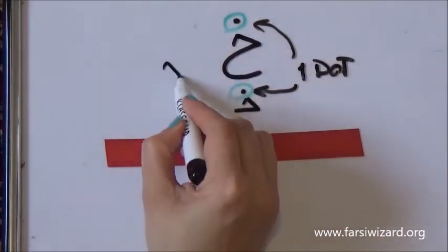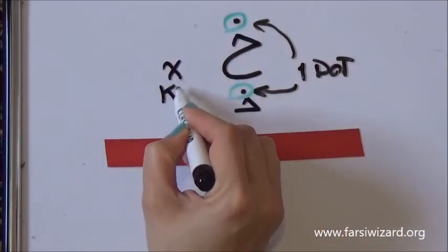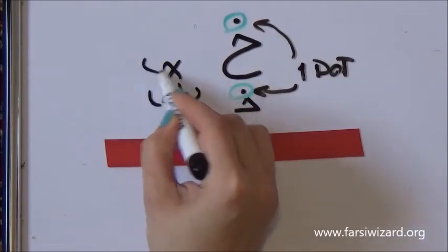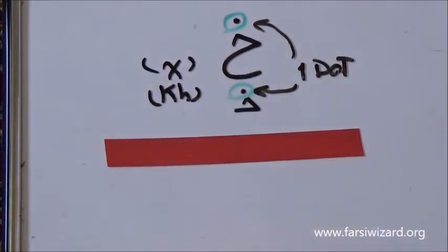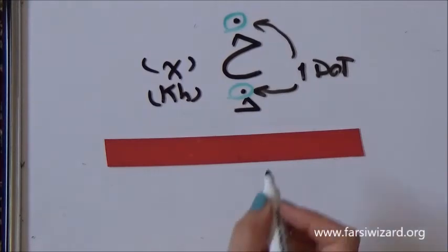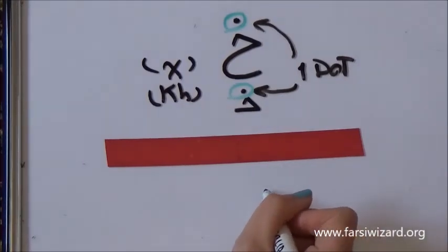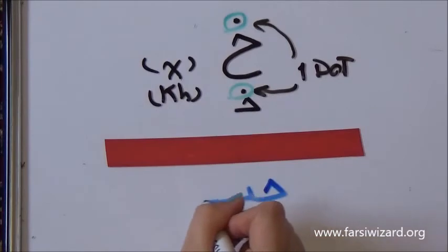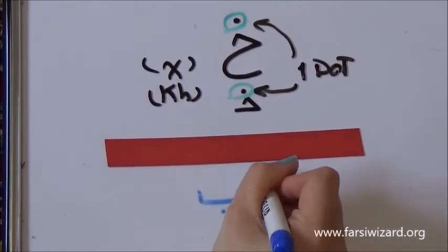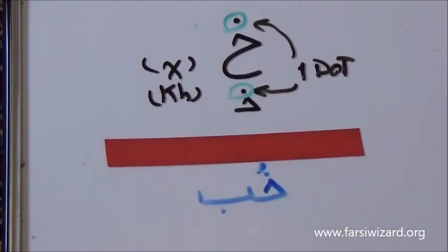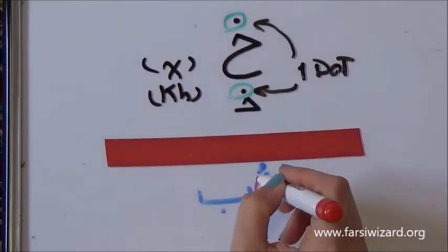If you remember, this sound was KHE, which sometimes is written as KH or X in English. So, KHE is produced as a glottal sound. It's as if you want to try to produce a sound from the bottom of your throat, KHE.